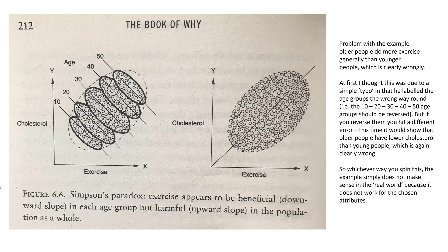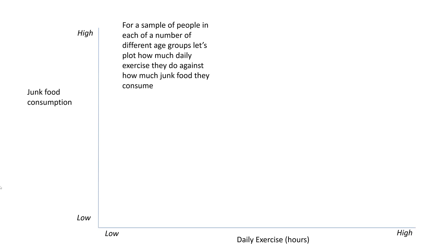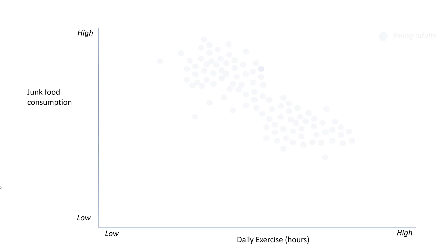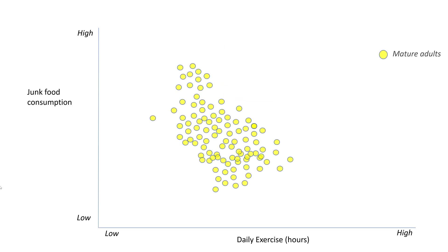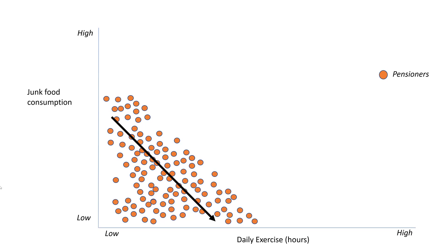There is a way of making it work by choosing a different attribute. What I've looked at is daily exercise against junk food consumption. Imagine a sample of people across different age groups. In teenagers, they generally do a lot of exercise and have high junk food consumption, but the trend is downwards — those who do the least exercise tend to eat the least junk food. The same phenomenon appears in young adults, mature adults, and pensioners: in each category, the more exercise they do the lower the junk food consumption.